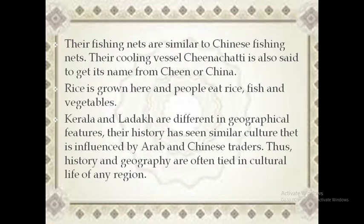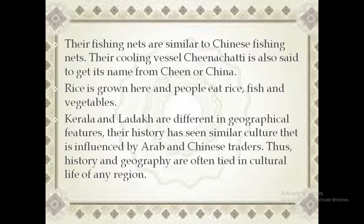Here is an interesting fact about Kerala. As it is a coastal region, fishing is one of the occupations, and fish are an important part of the diet for people in Kerala. The fishing nets used in Kerala are very similar to Chinese fishing nets. Apart from this, the vessel used in Kerala known as Chinna Chatti has got its name from 'Chin', meaning China.